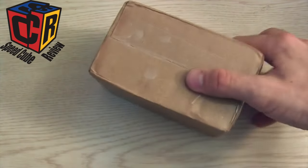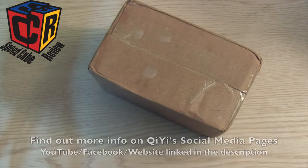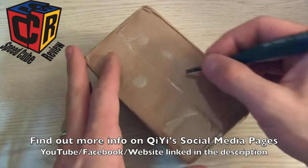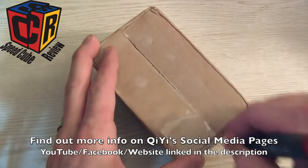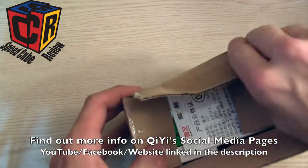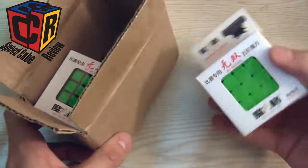Hey, Sean here from speedcubeview.com. So I have a new mystery box from Qiyi. Let's take a look. Now I have an idea of what's inside here, but I don't know exactly what it is or what it's like. Oh, there's two of them. Yep, that's what I thought.